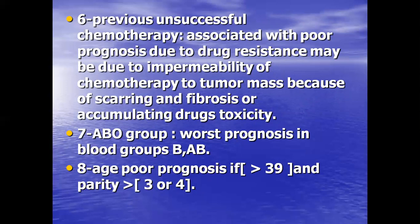The reason prior chemotherapy worsens prognosis is that drug resistance may develop due to impermeability of chemotherapy to the tumor mass because of scarring and fibrosis, or accumulating drug toxicity. ABO blood group also matters — worst prognosis in blood group B and AB.